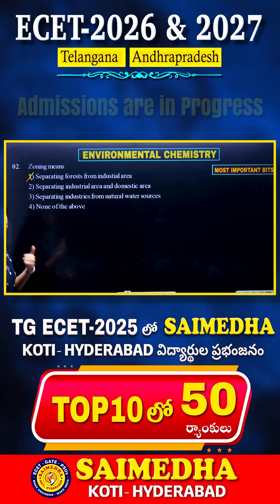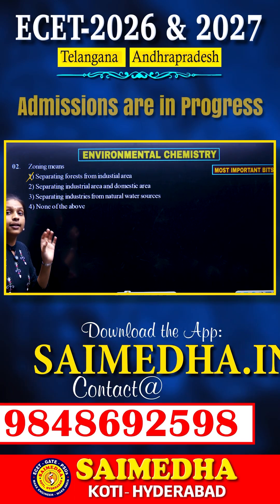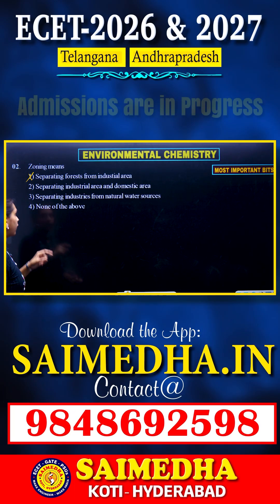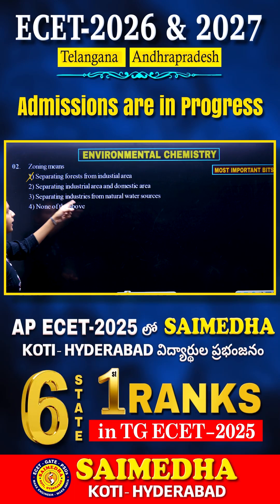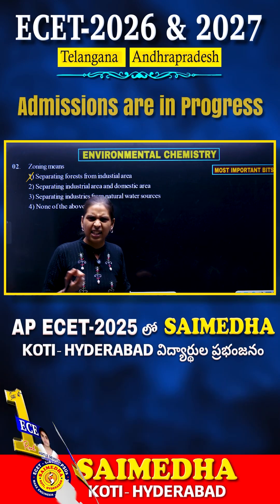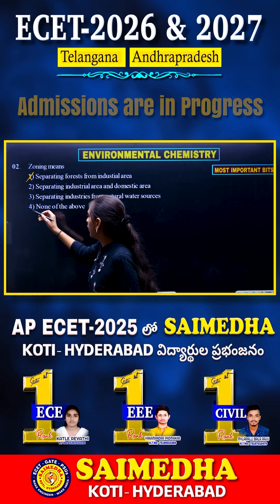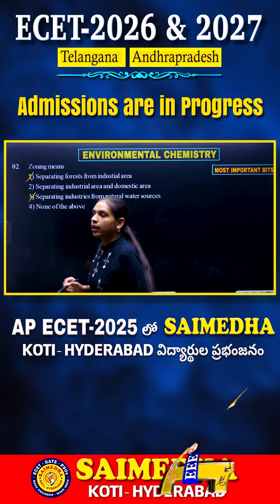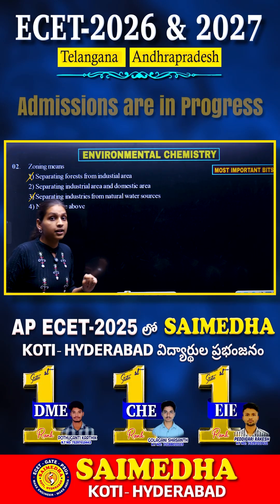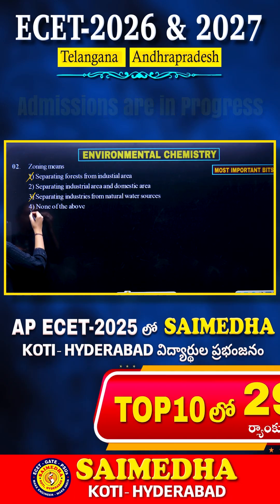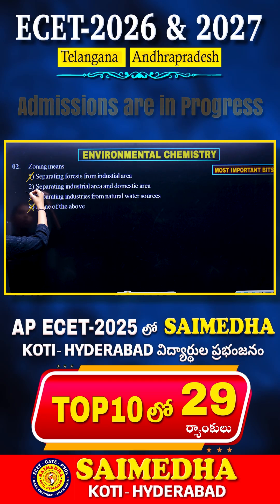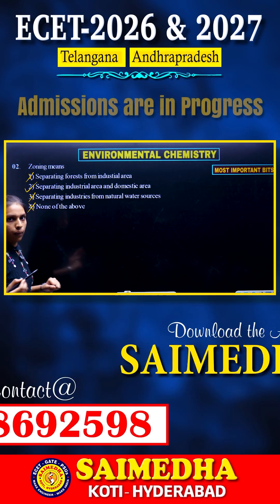This second option is the correct answer. Let us justify why the others are not. The third option says separating industries from natural water resources — that is not correct, so let us eliminate it. The fourth option is 'none of the above' — we already have the second option as the correct answer, so that is not possible either. The second option is the one to go with.